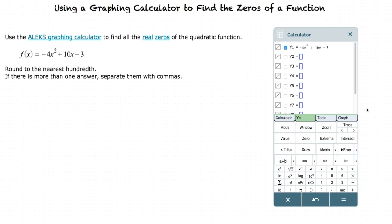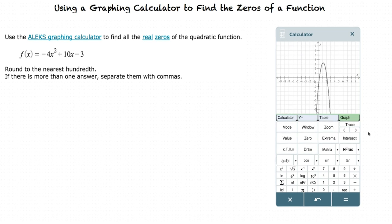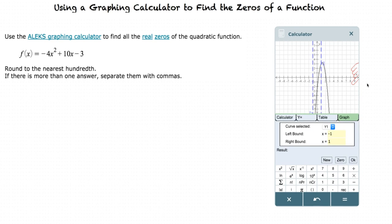To see a graph of this function, we can click on the graph button. If we click on the zero button, we'll be directed to a new screen. From here, we can find the zeros of our graph.